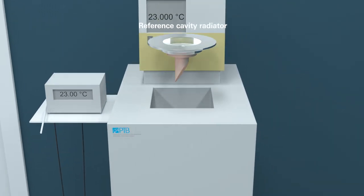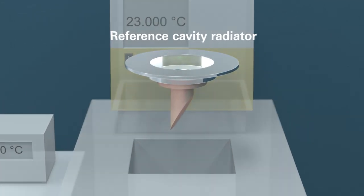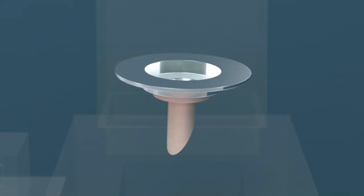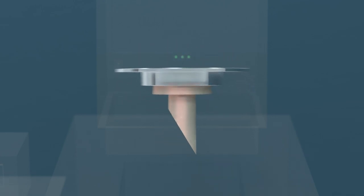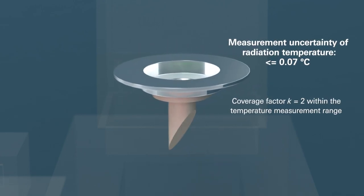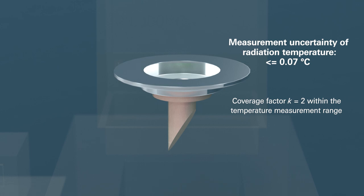Finally, you will need a reference cavity radiator. This is a black body which will be immersed in the reference water bath. The measurement uncertainty of the radiator's radiation temperature must not be greater than 0.07 degrees Celsius for a coverage factor of 2 within the temperature measurement range.